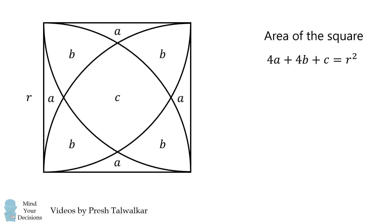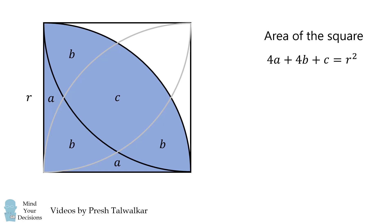Let's get another equation involving a, b, c. Let's calculate the area of this quarter circle. It'll be equal to pi r squared over 4. It'll also be equal to 2a plus 3b plus c. We now have two equations for three variables. Let's get a third equation.